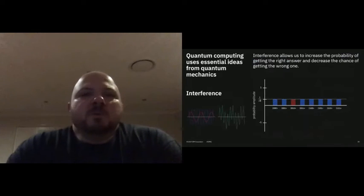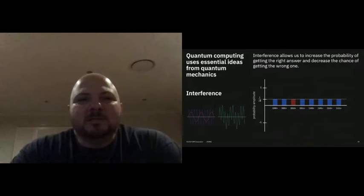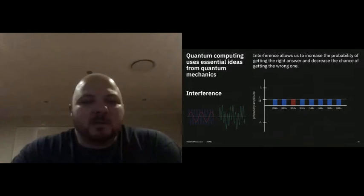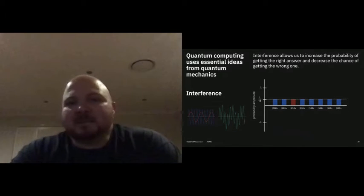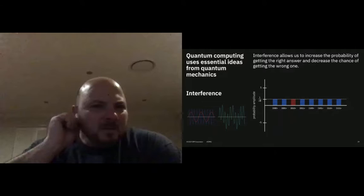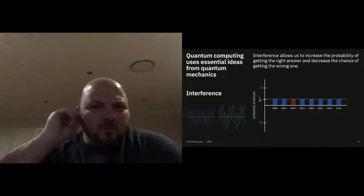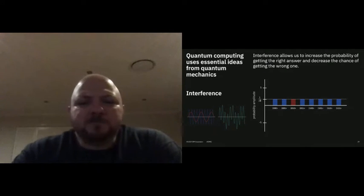The last concept we want to talk about is interference. Many of you who did science at school probably did the two-slit experiment, where you put a wave through a couple of slits and see the interference pattern that appears on the wall behind it. The same sort of concept is used in quantum computing.